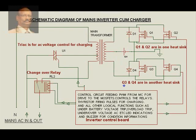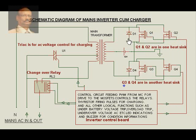It should be noted that during mains availability, the drive to the MOSFETs is not given — the drive coming from the control card is disabled. In the process, these MOSFETs are assumed to be non-existent. So the inbuilt diodes of the MOSFETs are present and they behave as rectifying diodes for battery charging purposes, as explained.